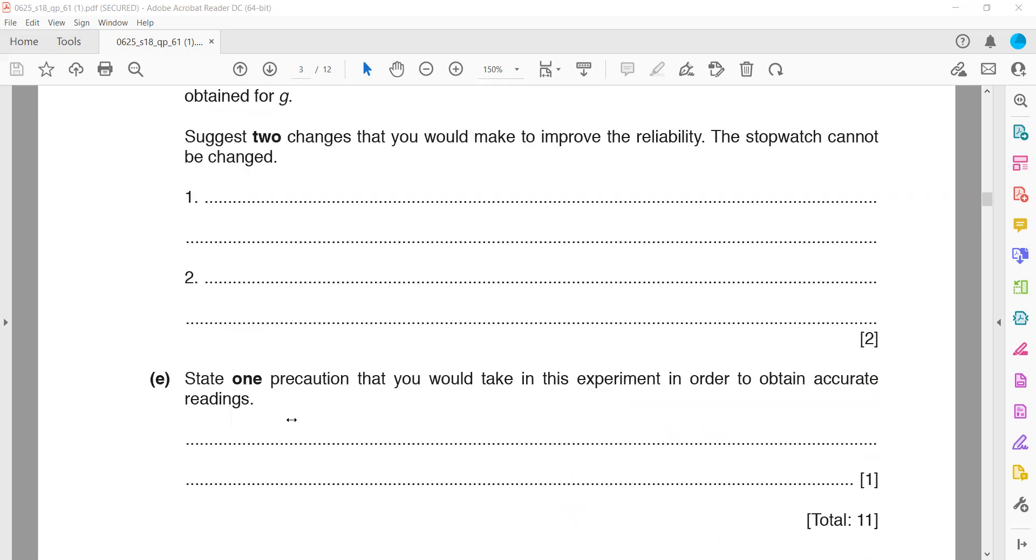These are some factors which can improve the reliability of results when measuring the time period of a simple pendulum. Looking perpendicular to avoid parallax error is one of the precautions we should take when measuring any length.